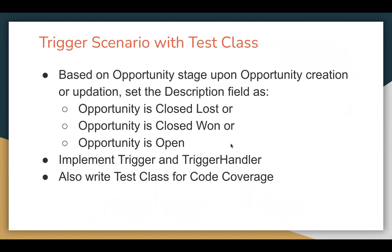Let's understand the scenario. Based on opportunity stage, upon opportunity creation or update, we need to set the description field as 'opportunity is closed lost', 'opportunity is closed won', or 'opportunity is open'.